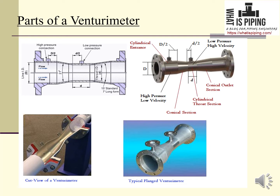In the sample venturimeter image, D is the inlet pipe diameter. Flanged connections are shown so it can be easily connected to the pipe flanges. The cylindrical inlet section is where high pressure and low velocity flow enters. This is followed by the conical convergent section, the cylindrical throat, and the conical outlet section. The upstream side and downstream side of the venturimeter are also shown in this cut view.